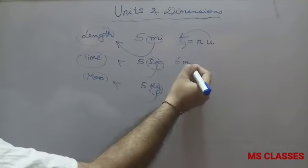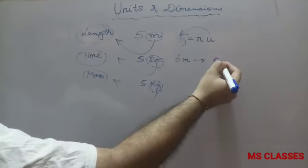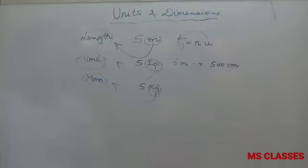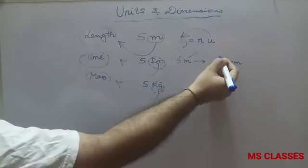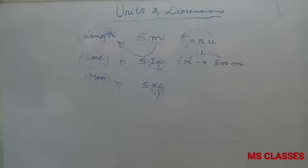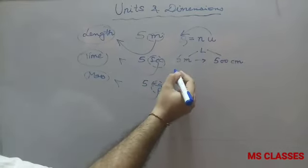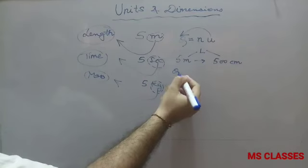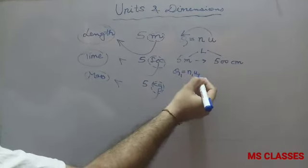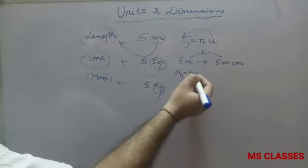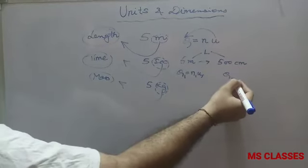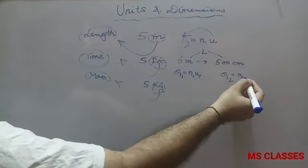If we are asked to convert five meters to centimeters, we write five meters as 500 centimeters. Both are giving us an idea about length. So we have Q₁ = N₁U₁ where five is N₁ and meter is U₁, and Q₂ = N₂U₂ where 500 is N₂ and centimeter is U₂.